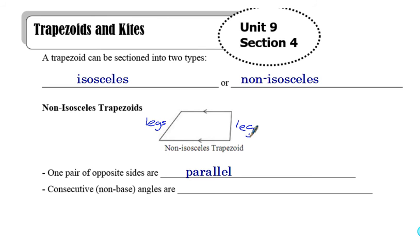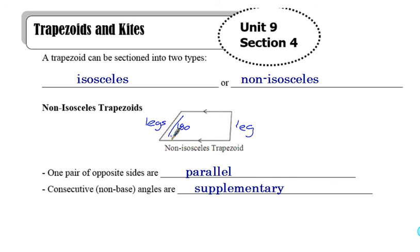Another fact about non-isosceles trapezoids is that consecutive non-base angles are going to be supplementary, so these two angles add up to 180. If you think back to earlier units, if I have parallel lines cut by a transversal, the same-side interior angles add up to 180. However, these two angles on the legs do not add up to 180 because the legs are not parallel.